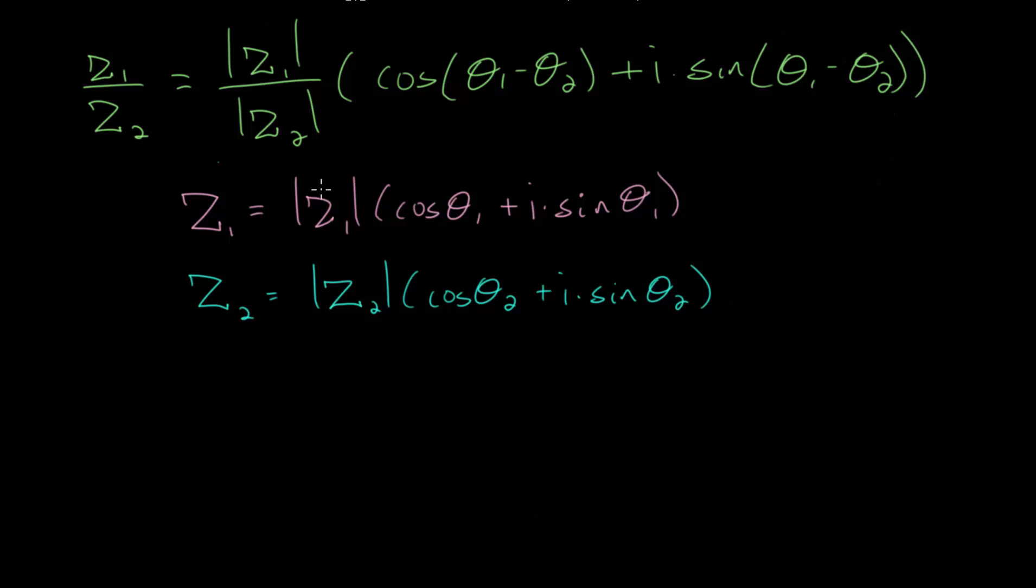In the previous video, we derived a formula for graphically dividing two complex numbers. We started with the polar representation of both complex numbers z1 and z2, where we have the magnitude of the complex number multiplied by the direction of the complex number, where theta1 is measured relative to the positive real number axis. When we divide these two complex numbers, we found this formula here, where we divide the magnitudes of the complex numbers and we essentially subtract their angles.